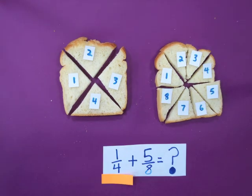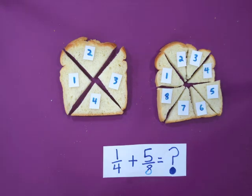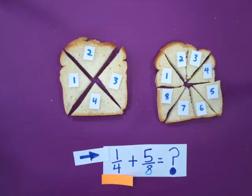The fraction on the left, one quarter, has four equal parts, so the denominator is four. The numerator, the number on the top, is one, so that means one slice out of the four is going to be chosen.